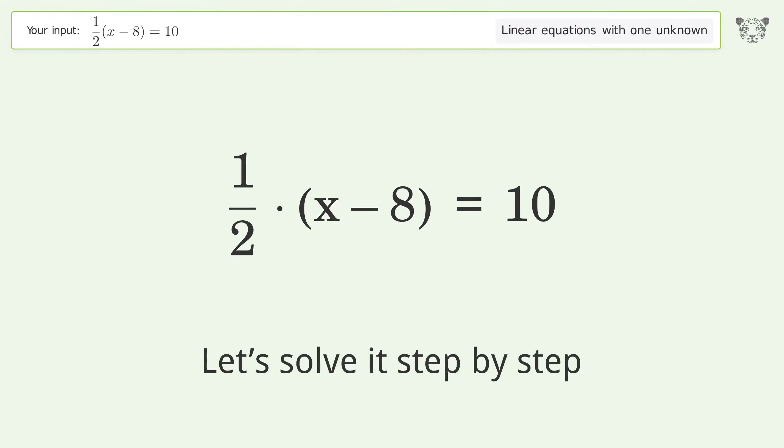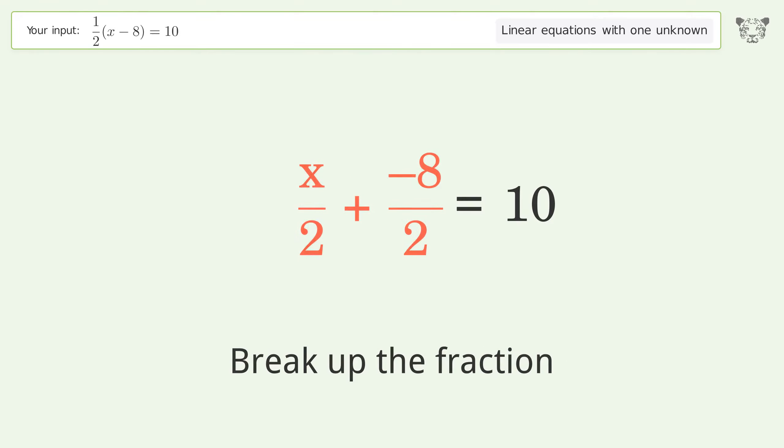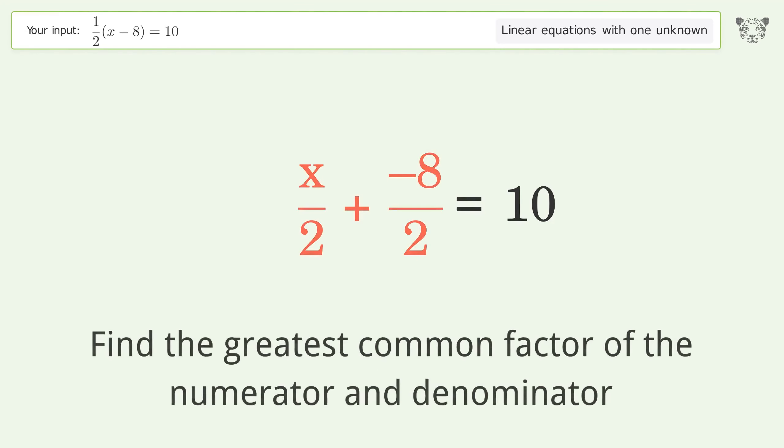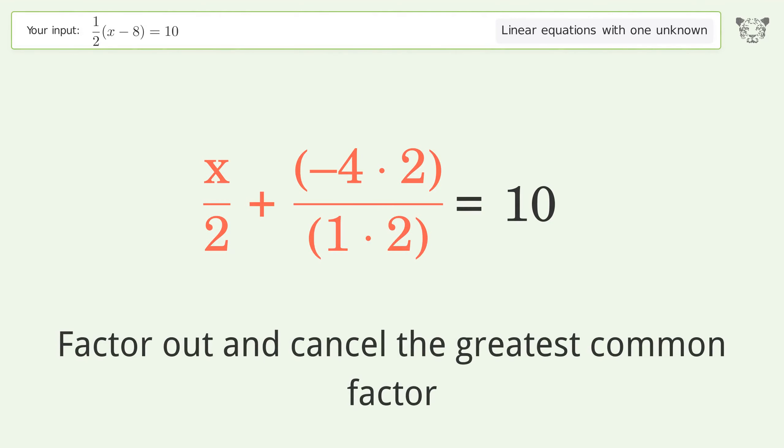Let's solve it step by step. Simplify the expression, multiply the fractions, break up the fraction. Find the greatest common factor of the numerator and denominator. Factor out and cancel the greatest common factor.